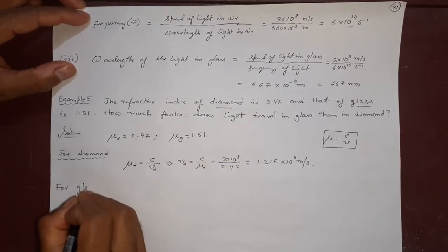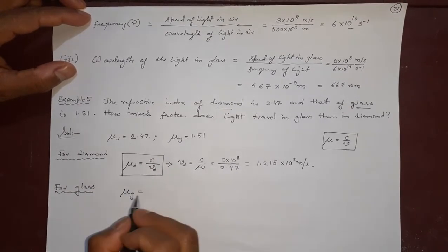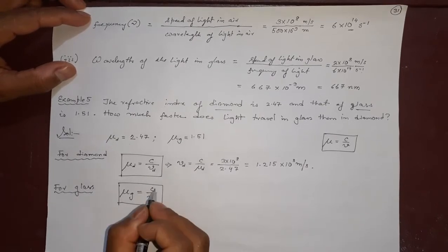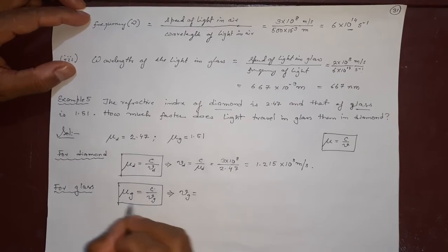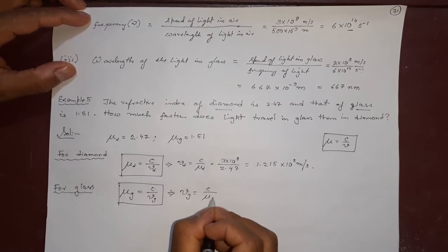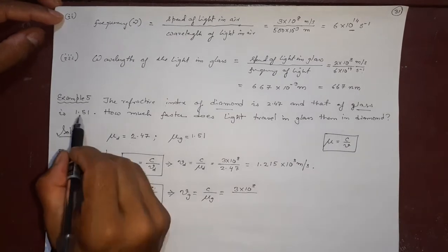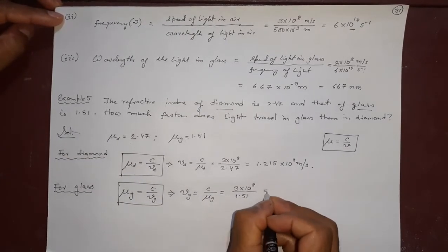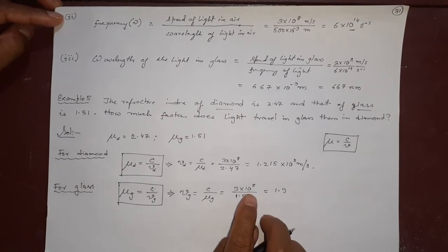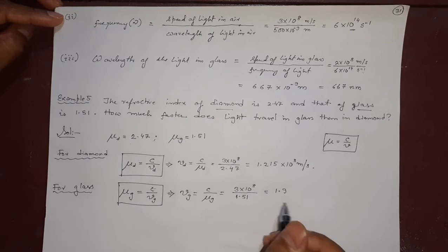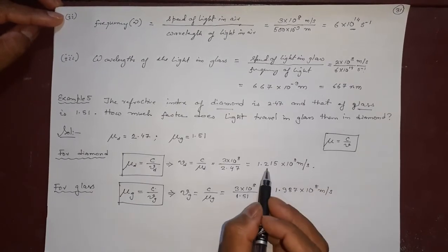For glass: μ_g = c/v_g, so v_g = c/μ_g. With c = 3×10⁸ m/s and μ_g = 1.51, we get v_g = 3×10⁸ / 1.51 = 1.987×10⁸ meter per second. Note that if μ_g were exactly 1.5, we could simplify more easily, but 1.51 requires direct division giving 1.987×10⁸ m/s.